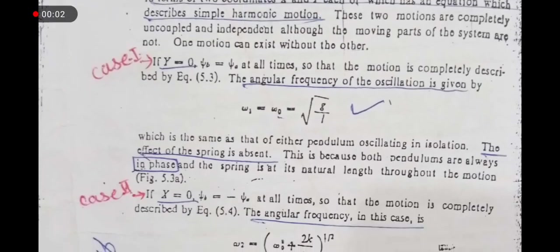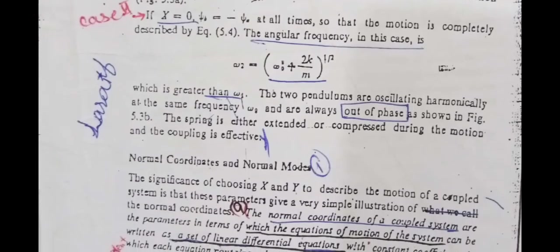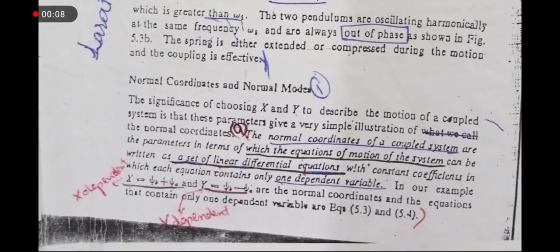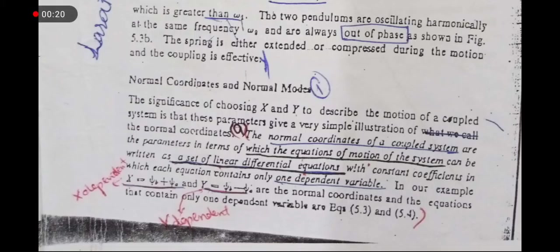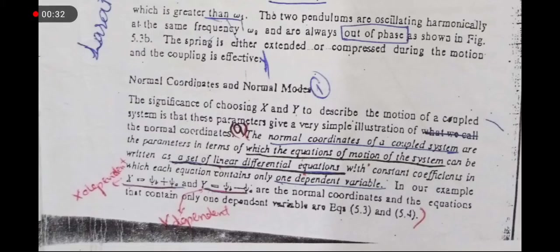Hello everyone, today I am going to tell you about normal coordinates and normal modes. The significance of choosing x and y: you have selected x over y variables to describe the motion of a coupled system. These parameters give very simple illustrations of normal coordinates. The normal coordinates of coupled systems are parameters in terms of which the equation of motion of a system can be written as a set of linear differential equations. This is why we also choose x and y.